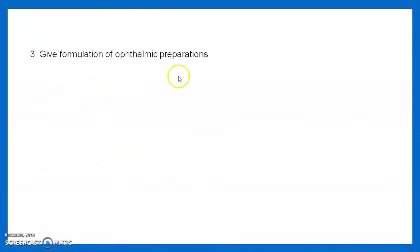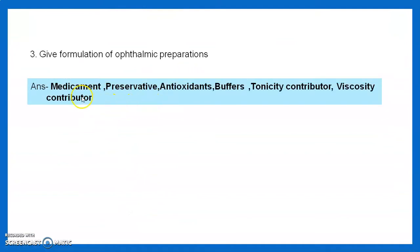Question 3: Give the formulation for ophthalmic preparation. Ophthalmic preparations contain: medicament, preservative, antioxidants, buffers, tonicity contributors, and viscosity contributors.